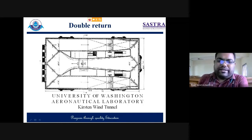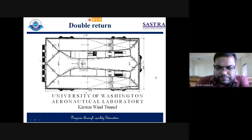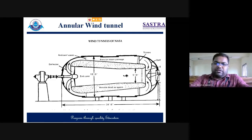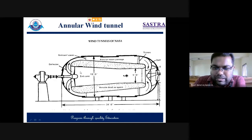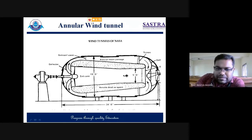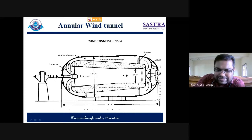The combined flow then comes here, gets divided into two equal parts, and the process continues — so nothing is being sent out of the tunnel; it is essentially closed but with a double return configuration. The next configuration is the annular wind tunnel, taken from the NASA website. The annular wind tunnel has a cylindrical kind of shape. The exterior surfaces are completely closed — nothing is taken from outside. There is a deflector which deflects flow in two directions, and the model is mounted in the test section. A screen — also a honeycomb structure — is provided at the test section entrance to make the flow uniform.